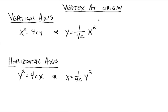Remember from previous knowledge that if we wrote this as y equals 1 over 4c times x minus h squared plus k, the x minus h thing moved your graph right or left depending on if h was positive or negative, and your k value moved your graph up or down depending on whether k was positive or negative. That's the concept that leads us into the standard form of a parabola with a vertex h, k.